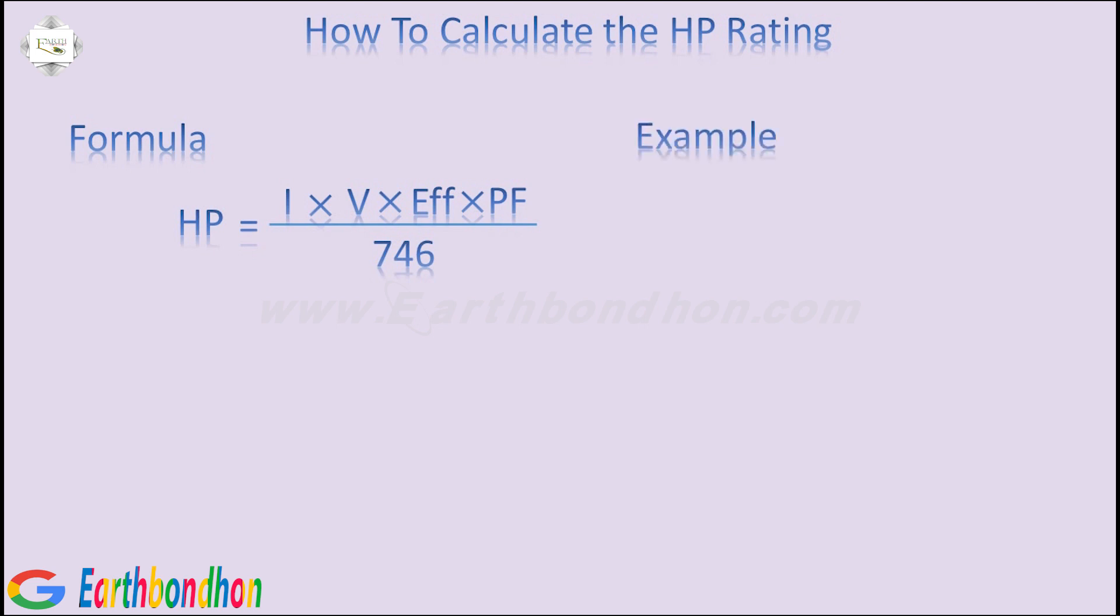Example: Current equals 7.2 Ampere, Voltage equals 240 Volt, Efficiency equals 0.82, Power Factor equals 0.8.